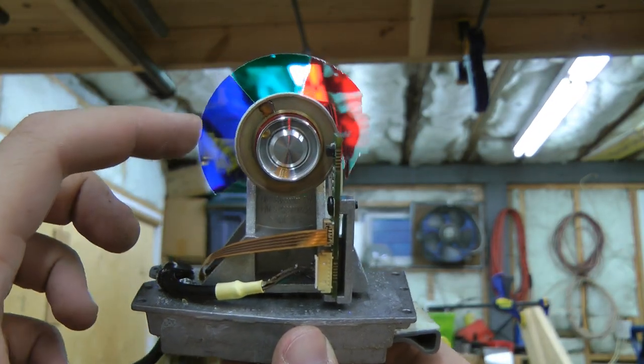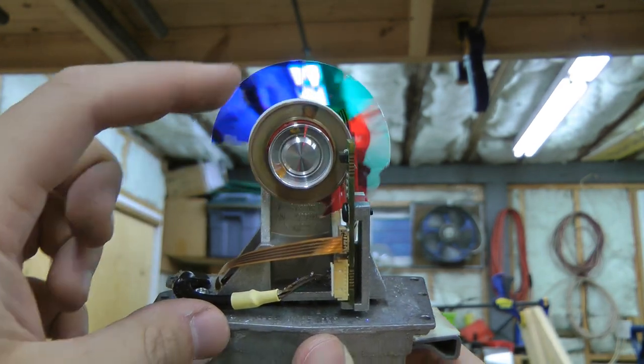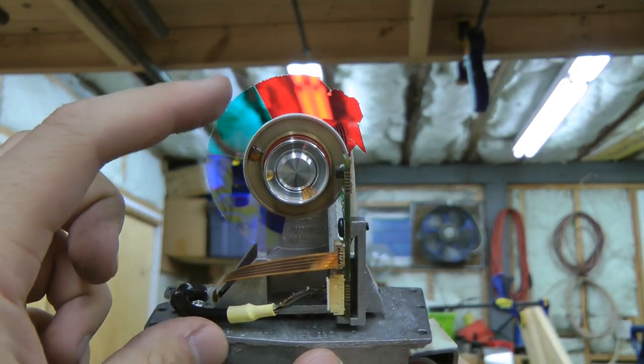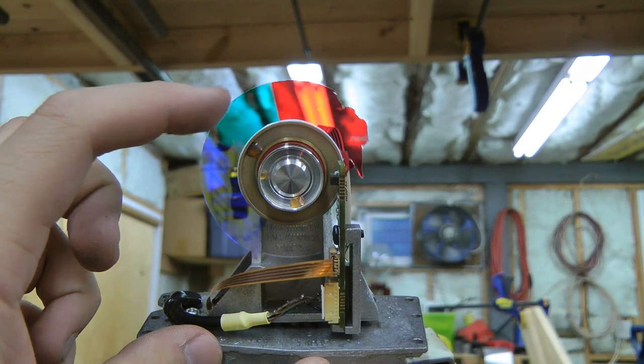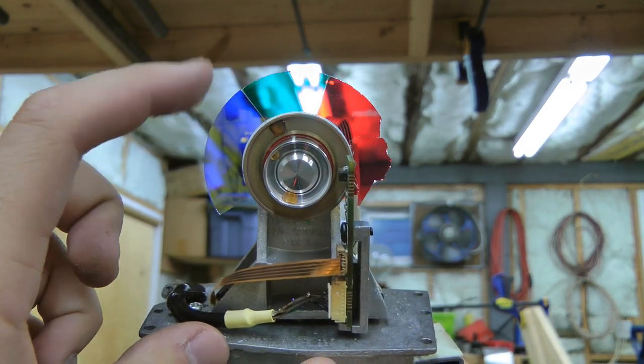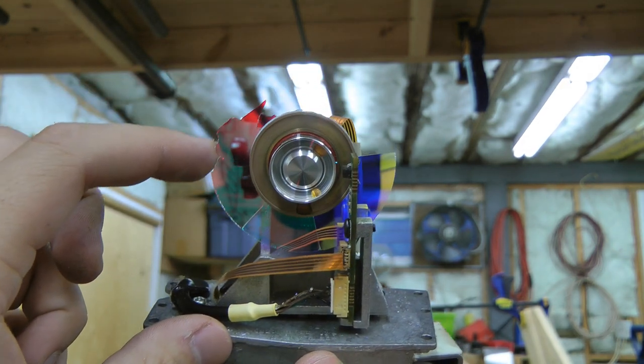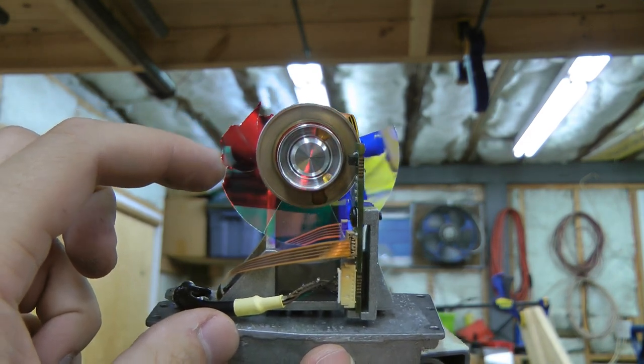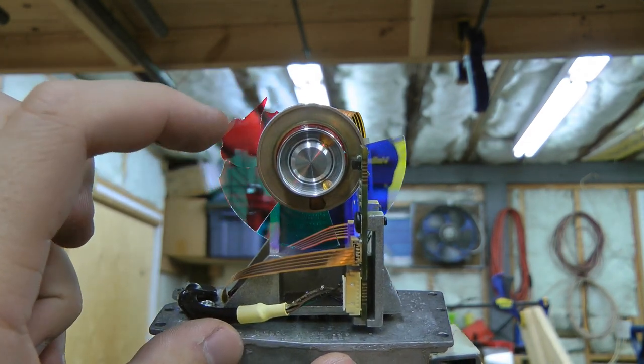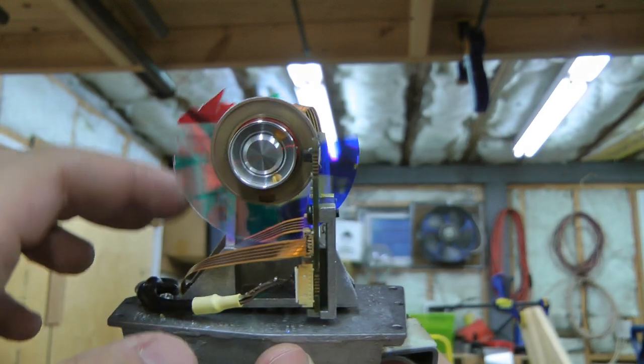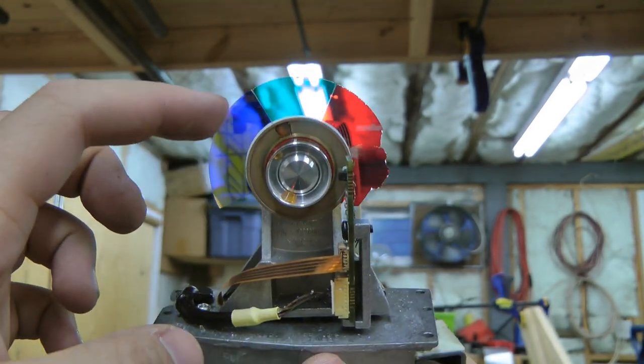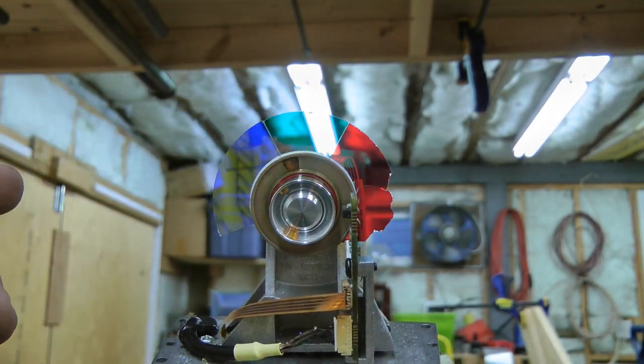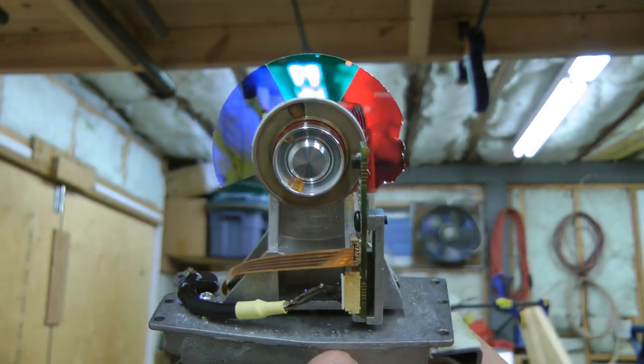This color wheel's a bit odd in that it has blue, cyan, and red sections. You normally have red, green, and blue. This one has cyan for some reason, and I think there was green in the broken part. There's a little sliver of green if you can just see it around here. I suspect the cyan maybe to get some extra light through, because cyan is basically blue and green.